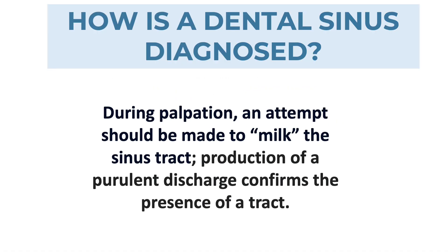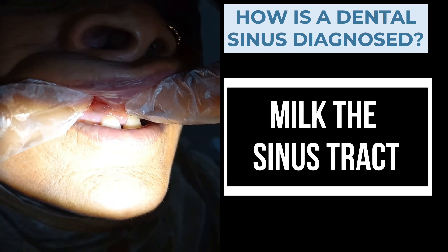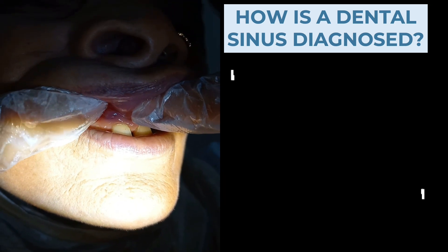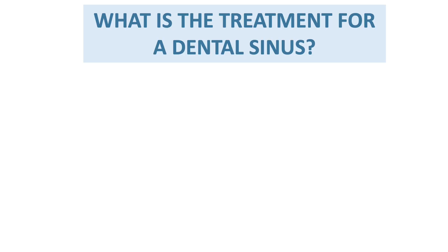The second method to diagnose the sinus tract: during palpation, an attempt should be made to milk the sinus tract. Production of purulent discharge confirms the presence of the tract. As you can see in the figure, if purulent discharge is produced from the sinus or pimple-like opening, it confirms the presence of the sinus tract.